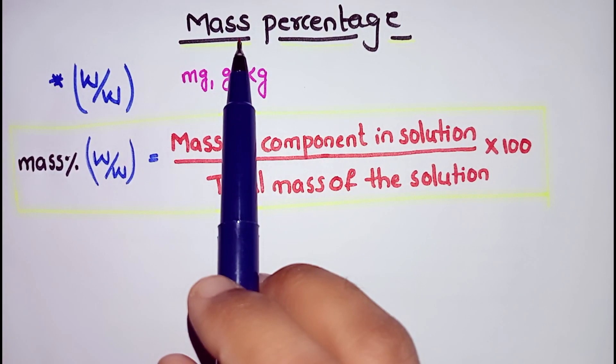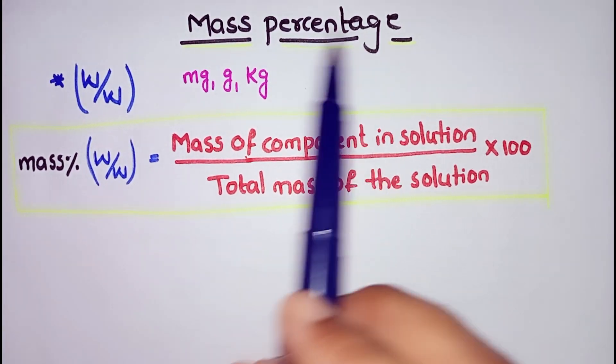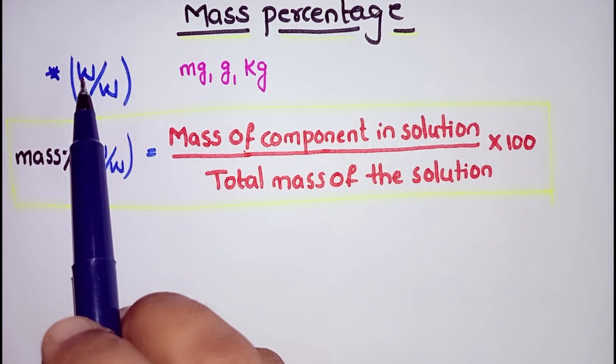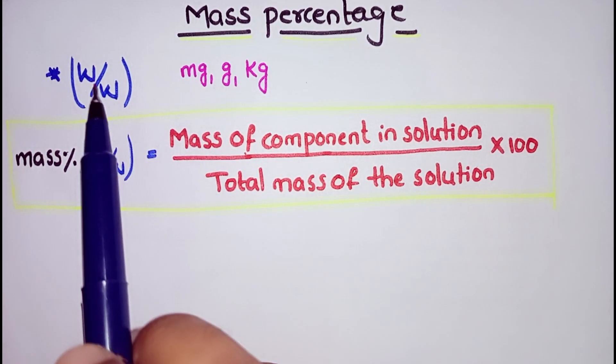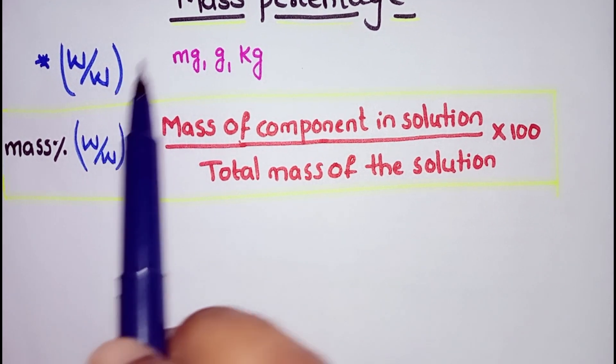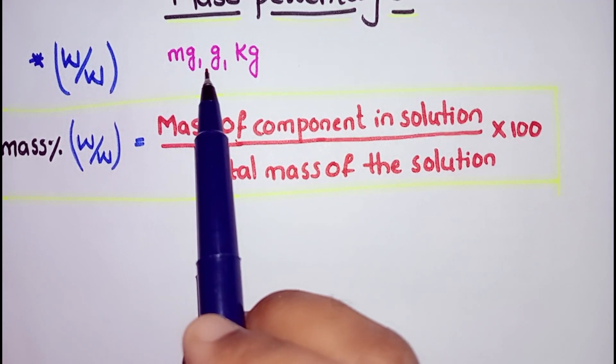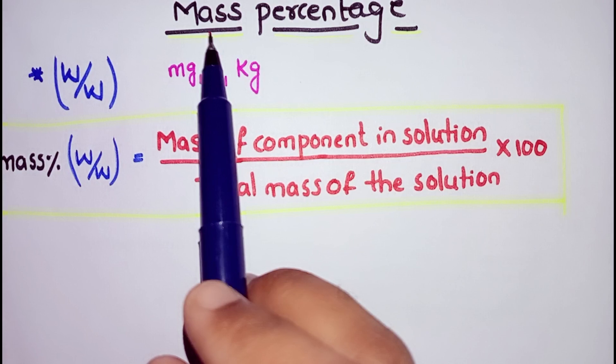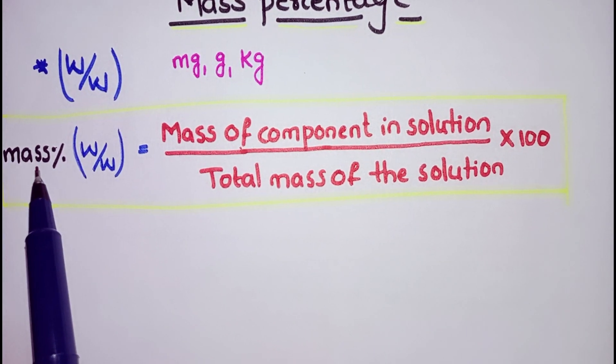Mass percentage is one of the concentration terms denoted by w/w. Let's suppose you are taking solute and solvents both in milligrams, grams, and kilograms. Then you can calculate mass percentage using the formula.